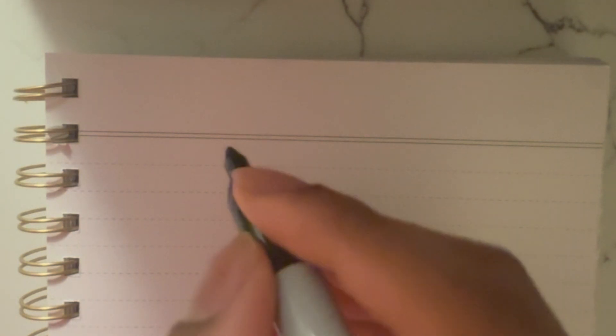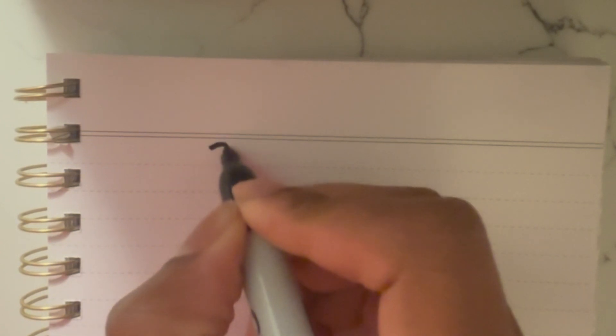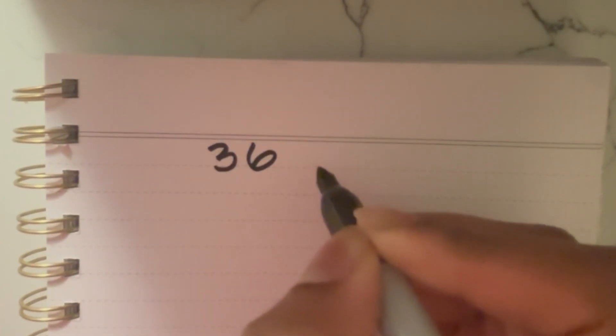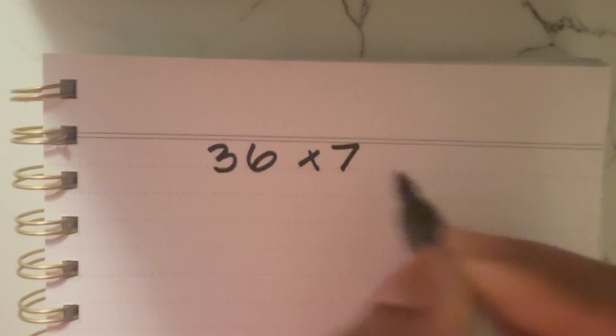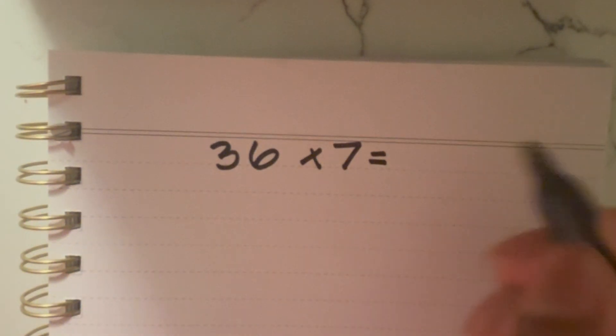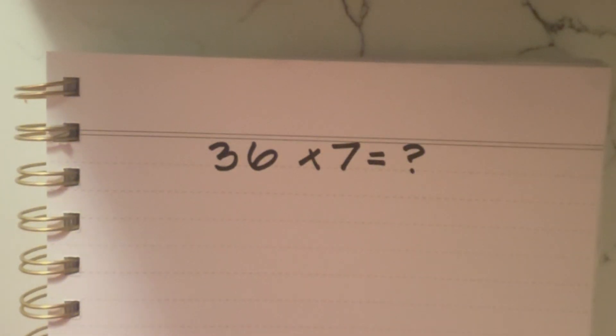Let's look at this multiplication problem. We have 36 times 7, and we want to find the product of these two numbers.